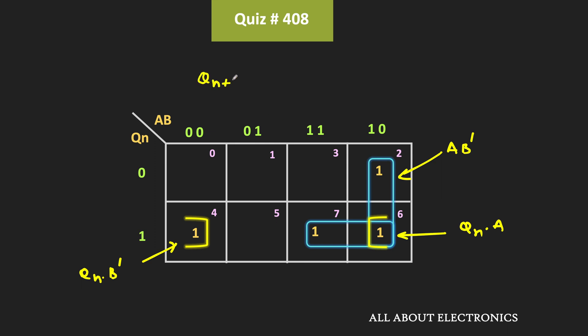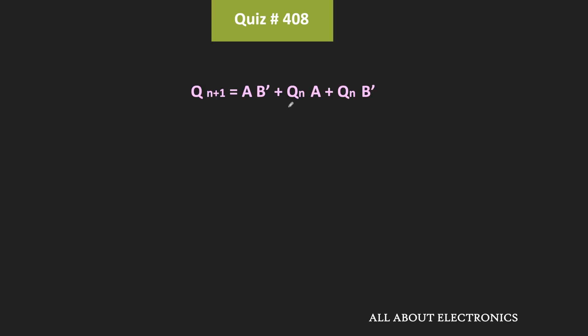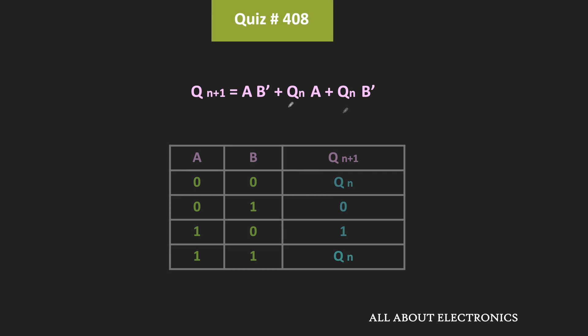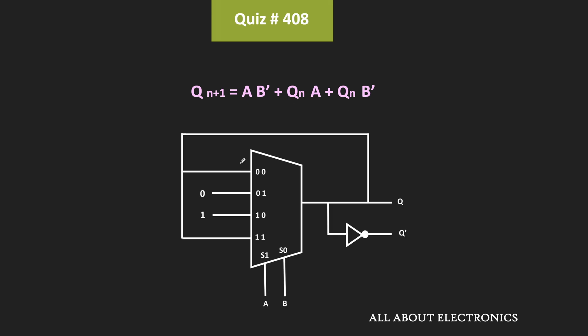So now, qn+1 is equal to a·b' + qn·a + qn·b'. This is the characteristic equation of the given circuit. By putting the values of variables a and b in this equation, we can also verify it, and therefore we can confirm that this is the characteristic equation of the given circuit.